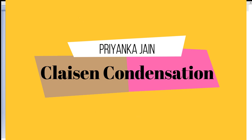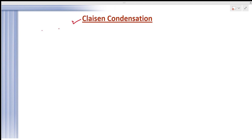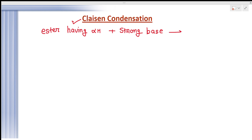What is Claisen condensation reaction? In this reaction we take an ester with alpha hydrogen atoms — it should have at least two alpha hydrogen atoms. When an ester having alpha hydrogen atoms is treated with a strong base, it undergoes self-condensation and produces a beta-keto ester, meaning at the beta position of the ester we get a keto group. This type of reaction is known as Claisen condensation.